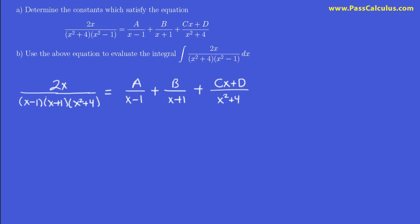When I multiply this by that denominator, they cancel off, and I'm left with 2x. Here's my a. The x minus 1's cancel, and I'm left with x plus 1, x squared plus 4.